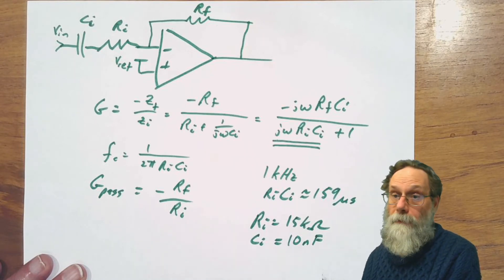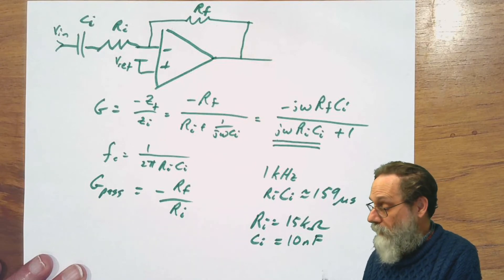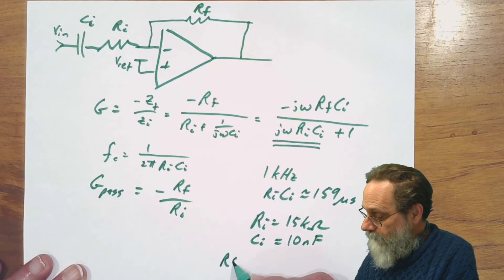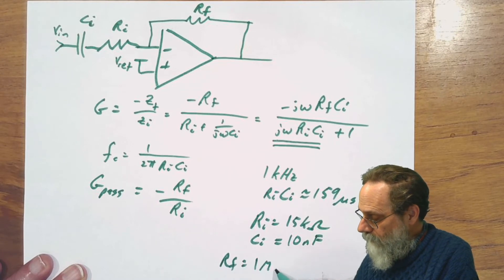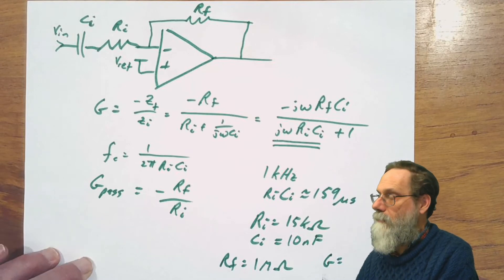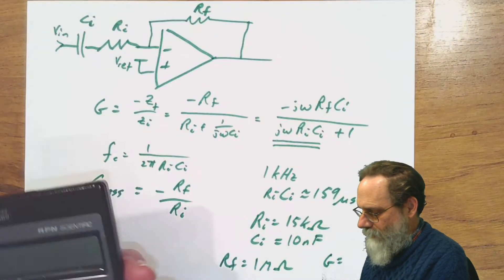Now we need to pick RF. Let's pick something so we get a pretty large gain for this one. Let's say RF is 1 megaohm.